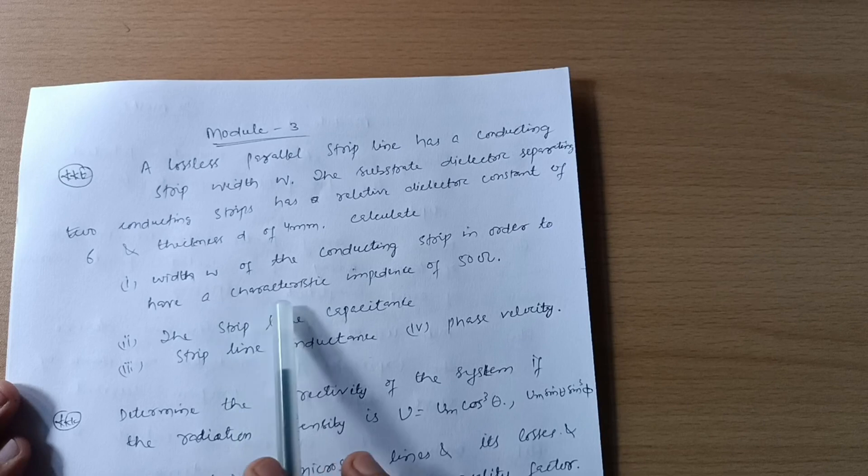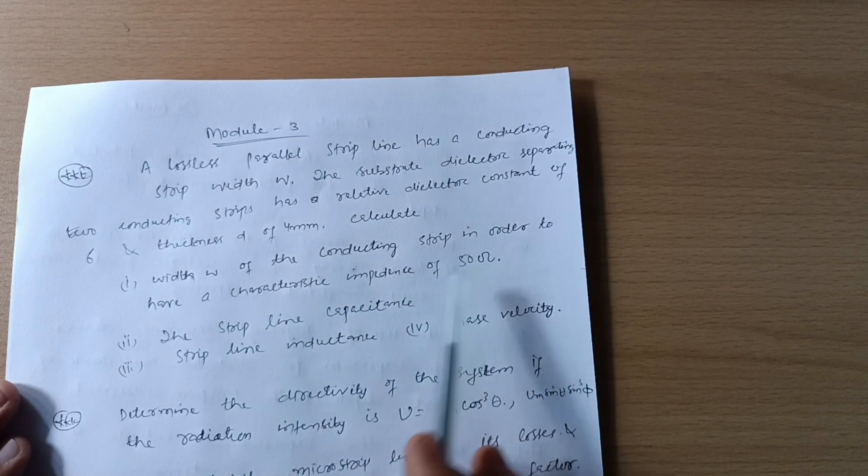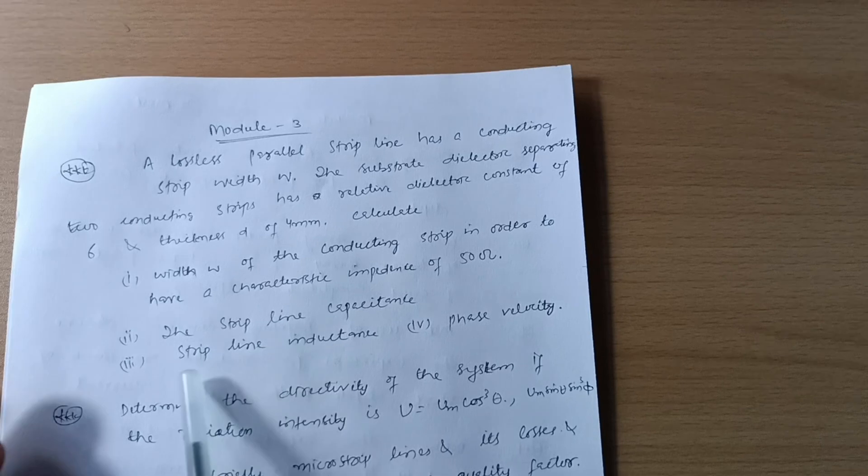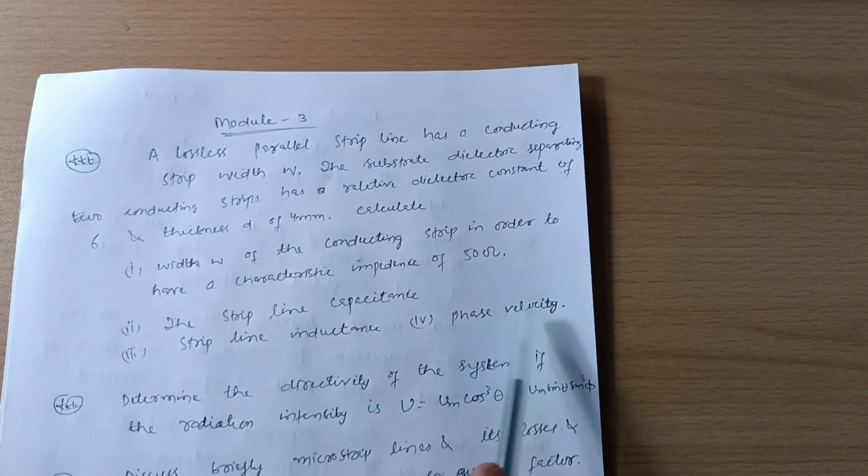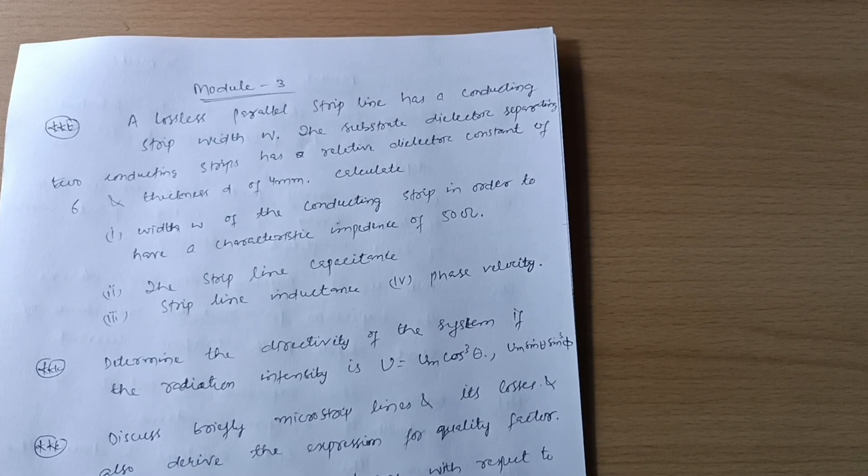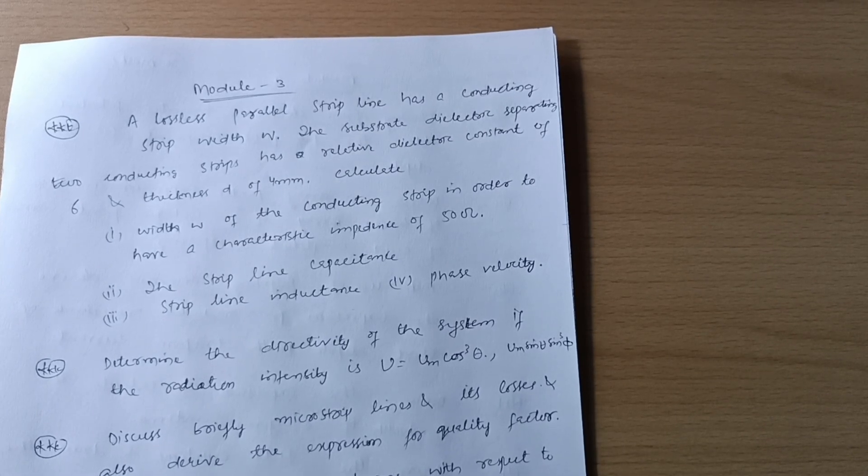Calculate width w of the conducting strip in order to have a characteristic impedance of 50 ohms, the strip line capacitance, and strip line inductance, and phase velocity. So these four terms you have to calculate in this particular question. Almost three times VTU has asked this question in the examination, so you should not lose these six to seven marks.